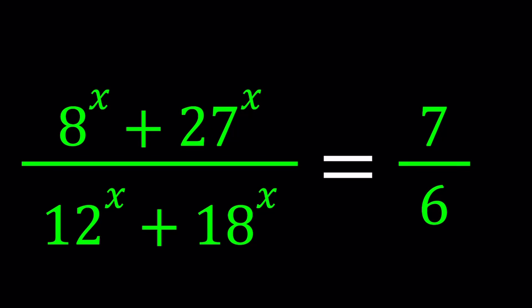Hello everyone. In this video we're going to be solving an exponential equation. We have 8 to the power x plus 27 to the power x divided by 12 to the power x plus 18 to the power x and that is equal to 7 over 6. And we're going to be solving for x values.